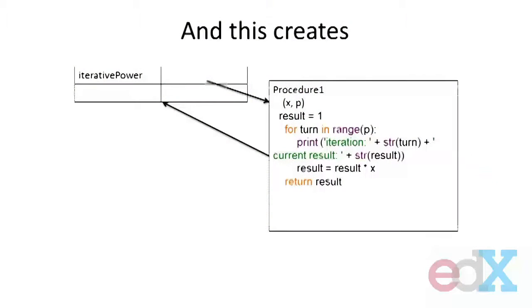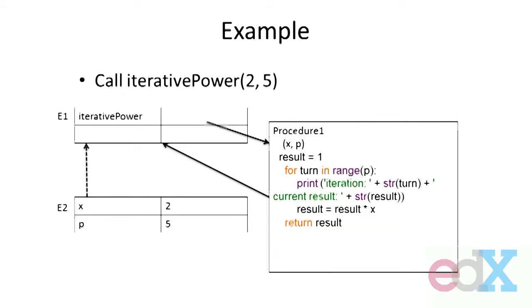Now let's think about what happens inside the environments, the scoping of variables. If I evaluate that definition, what it does is create a binding for the name iterative_power to a procedure object. Inside there I have the list of formal parameters and the body. I also have an environment pointer that points back to the environment in which I did the definition.